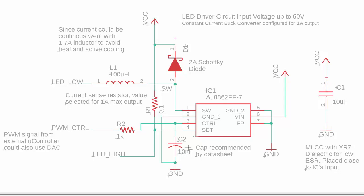C2 was recommended by the data sheet at 10 nanofarads — my guess is it's used to shunt high-frequency noise to ground. I also added R2, which is a current-limiting resistor for the PWM control signal coming in from the microcontroller. Another thing you could add to this circuit is a Zener diode to make sure VCC doesn't get too high in voltage. I plan to use a bulk 60-volt power supply that already has protection, so I didn't add a Zener diode here, but you could.